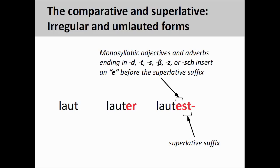If an adjective or adverb is monosyllabic — meaning it only has one syllable — and also ends in a 'd,' 't,' 's,' eszett, 'z,' or 'sch,' we need to insert an 'e' between the adjective and its superlative suffix when forming the superlative. As you see on the screen, the adjective 'laut,' or 'loud' in English, adds an 'e' before the superlative suffix. This serves to make the superlative more pronounceable.